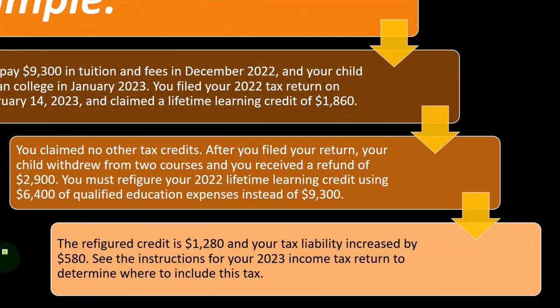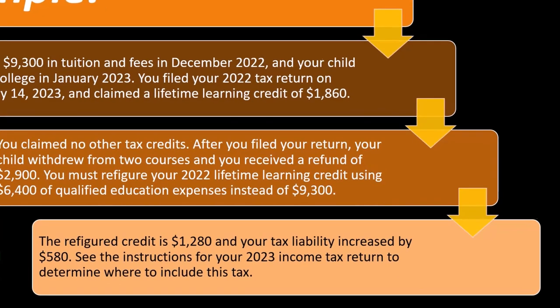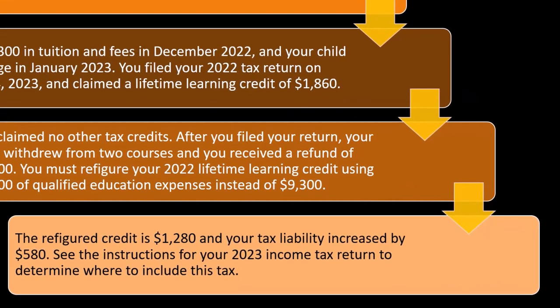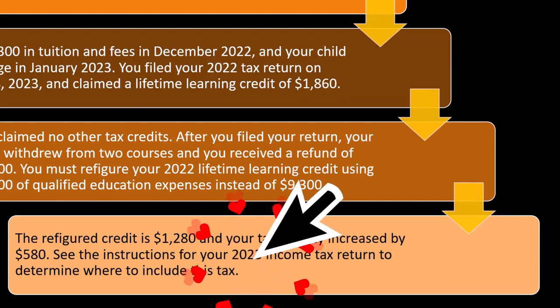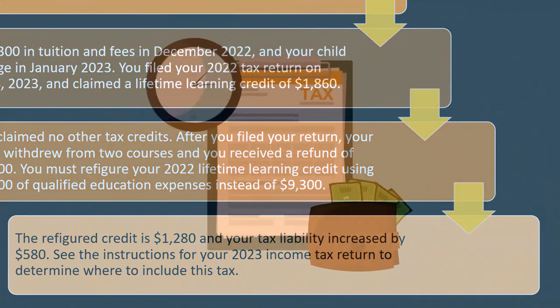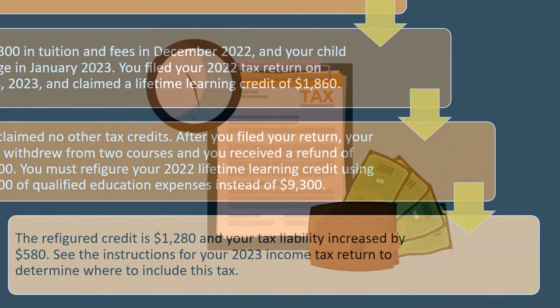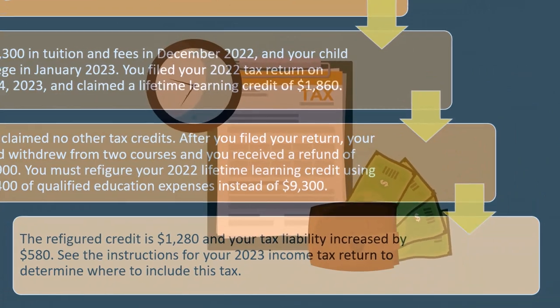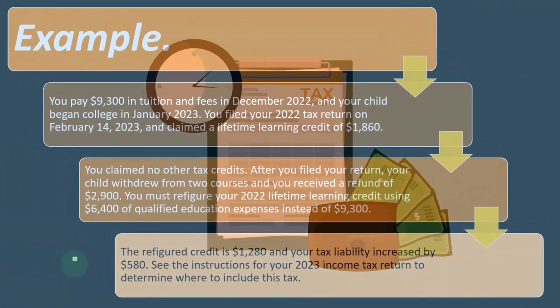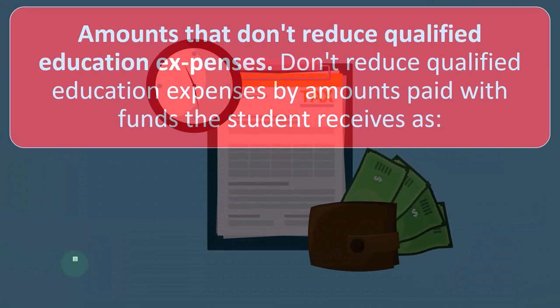The refigured credit is $1,280, and your tax liability increased by $580. So you're going to say: okay, I'm going to refigure my taxes without these expenses — it comes out to a $580 difference. You then see the instructions for the 2023 income tax return to determine where to include this tax — in other words, where to add it as an additional tax, like an other tax, on Form 1040.